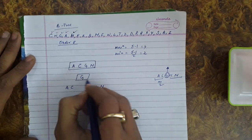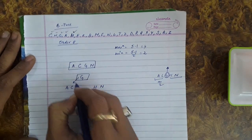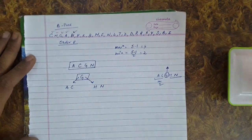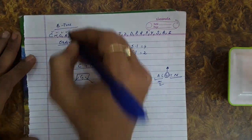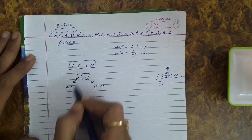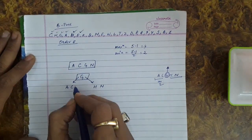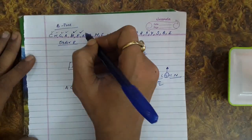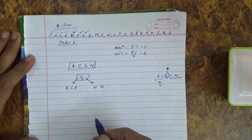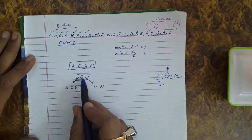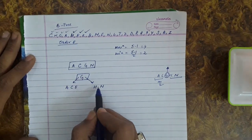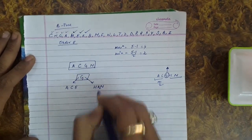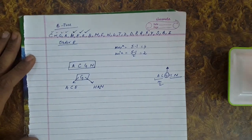This is the tree we have created. The next key for insertion is E, which is less than G, so E will be inserted in the left child. The next key is K, which is greater than G, so K will be inserted in between H and N.